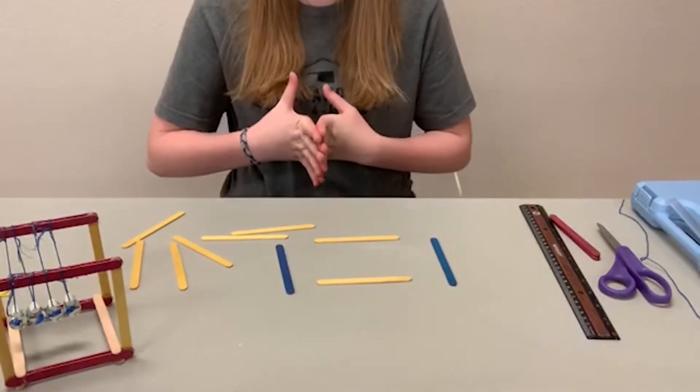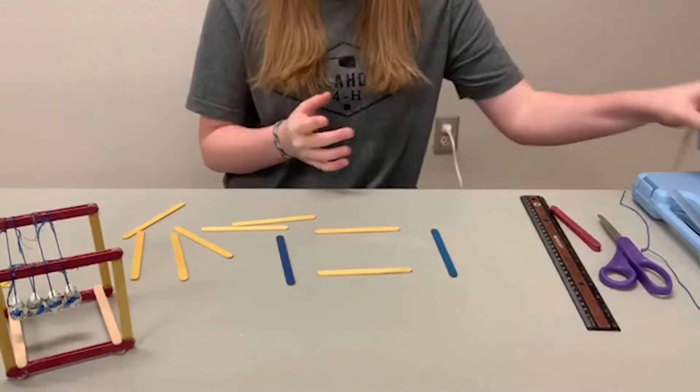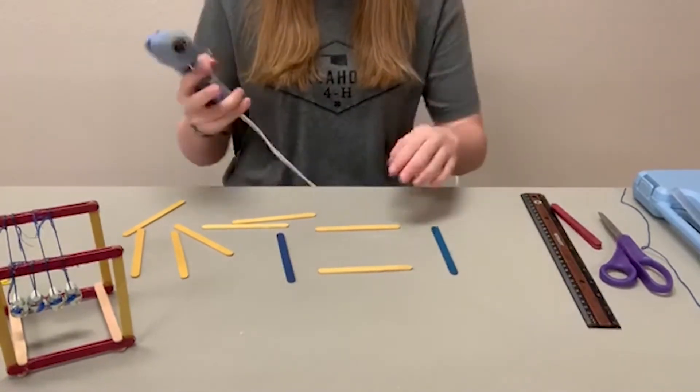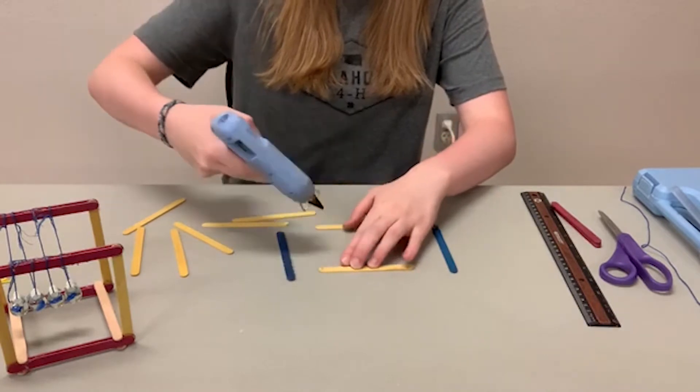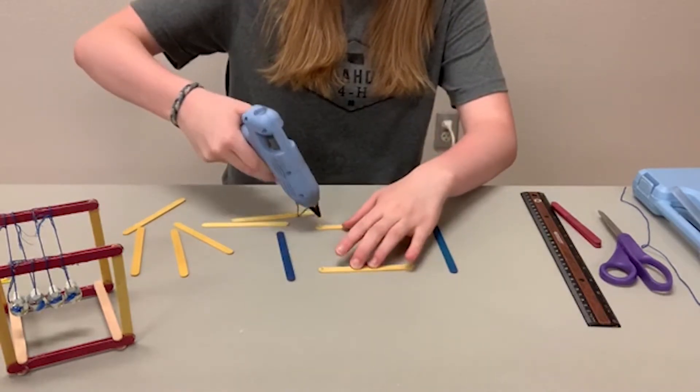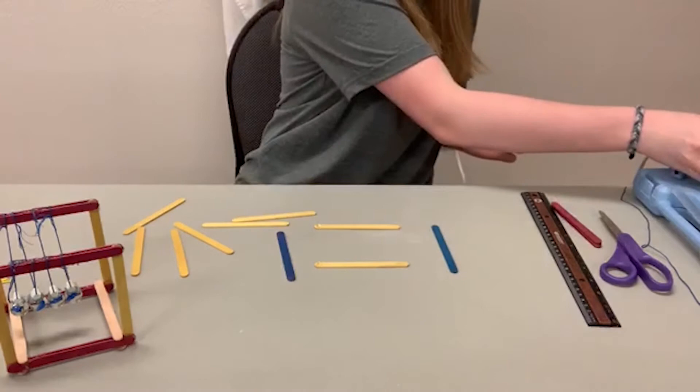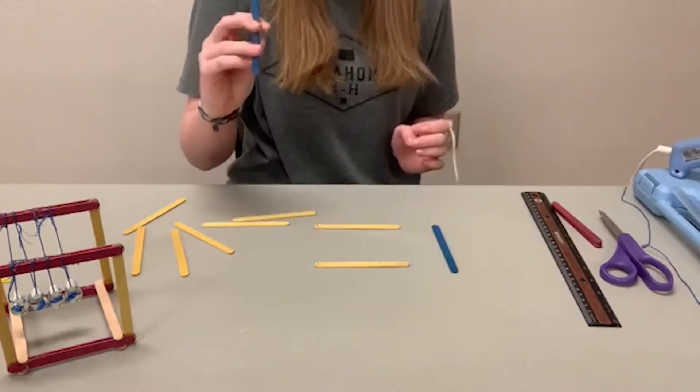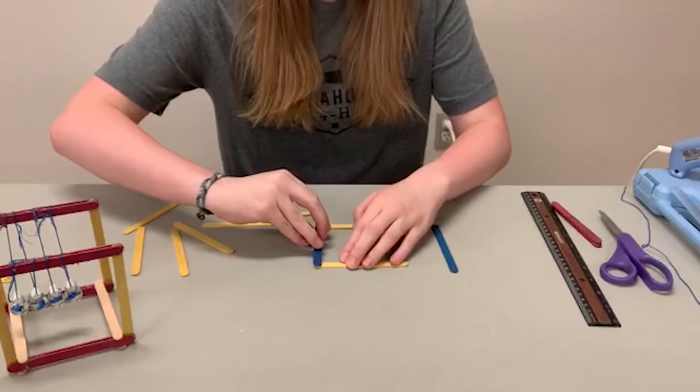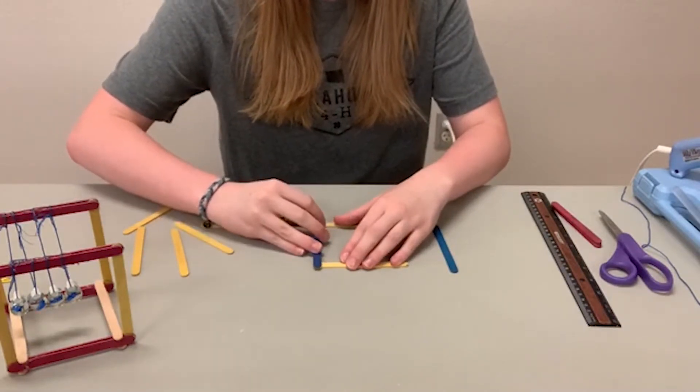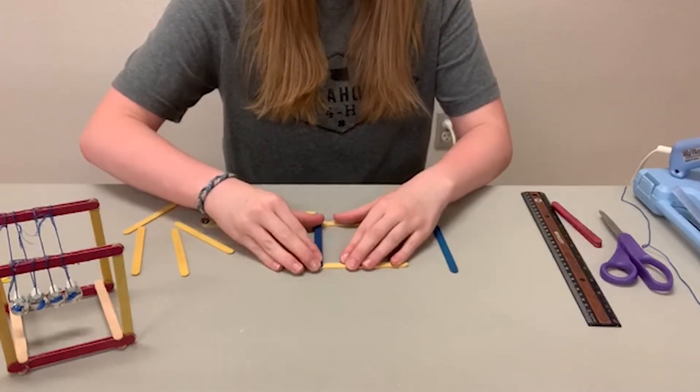The first step is you're going to glue your popsicle sticks together using a hot glue gun, putting one on each end right there and right there. Then you're going to place a different color popsicle stick that way it's easier to see and place it on top of those to where it forms a 90 degree angle on both sides.